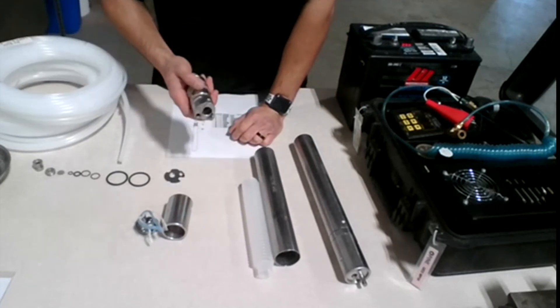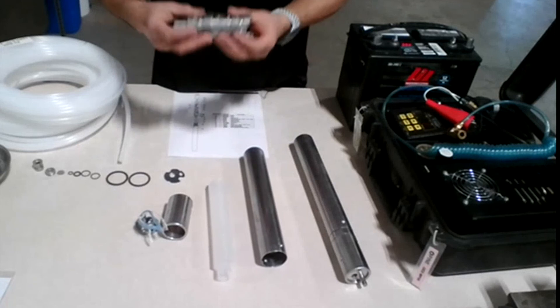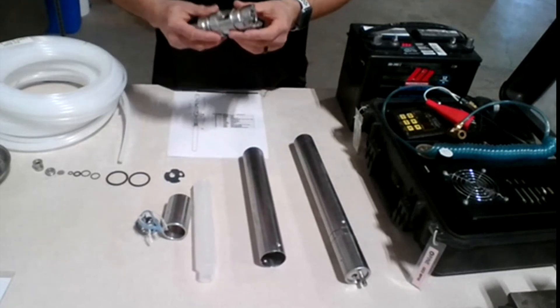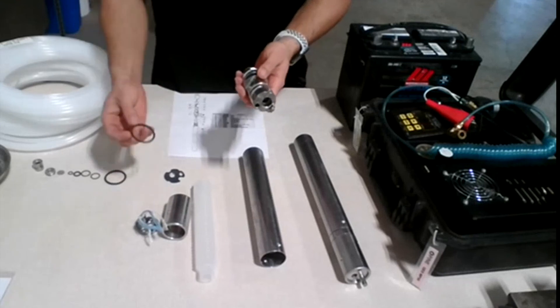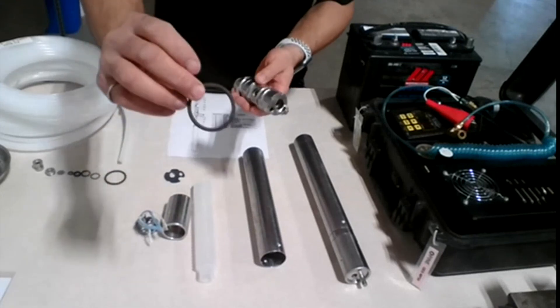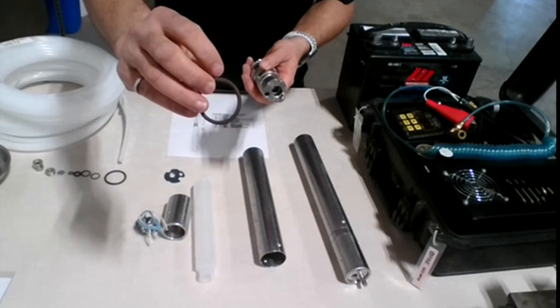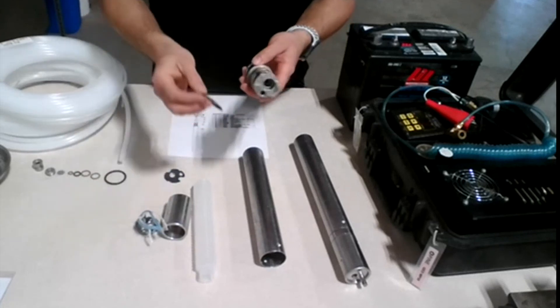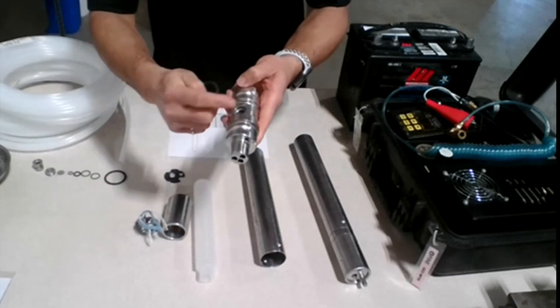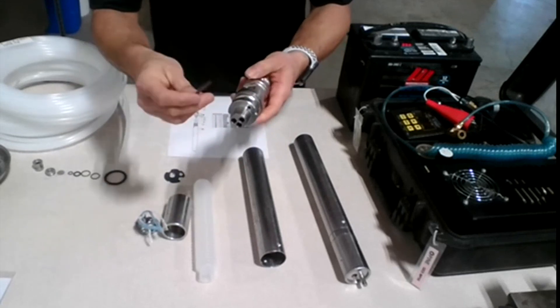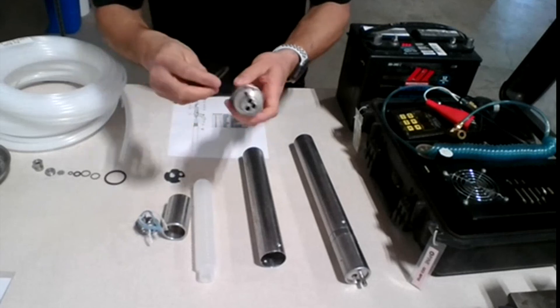So we're gonna show you exactly how to build one from scratch. So first of all, we have the head, the pump head here. So what we're gonna do is, so we have two large size O-rings. So we're just gonna install those ones. They have, we have two grooves here on the pump head.